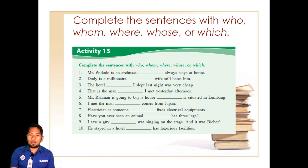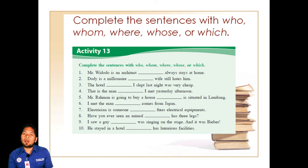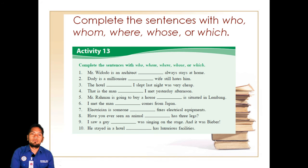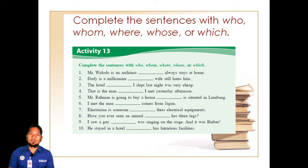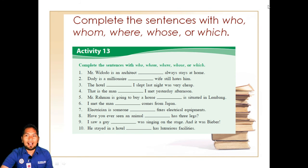Ingat, adjective clause itu bukanlah kata sifat seperti cantik, tampan, beautiful, handsome, angry, atau hungry. Yang dimaksud dengan adjective clause adalah gabungan beberapa kalimat yang memberikan informasi tentang si subjek, objek, atau tempat yang dibicarakan — bisa sebagai subjek, objek, maupun tempat. Dia menggunakan kata penghubung who, whom, where, whose, atau which. Ingat, kata-kata ini di sini bukan sebagai kata tanya, tetapi sebagai relative clause yang artinya 'yang'.